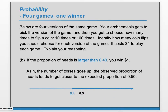Part B: if the proportion of heads is larger than .4, you win $1. If we're close to .5, we're happy because we win. If we're far from .5, we might be happy or we might not. So we prefer to be close to .5 because that ensures that we will win. As n goes up, the observed proportion should be closer to the expected proportion — so that's what we want. In this case, we want a larger number of tosses: 100 times.